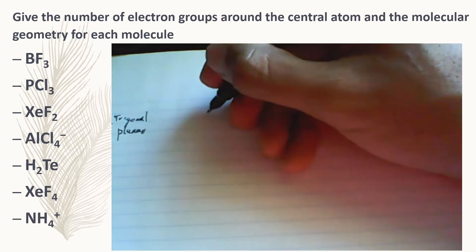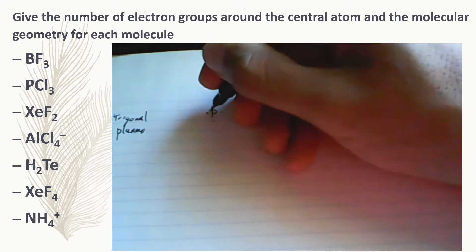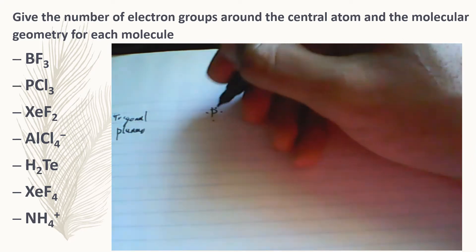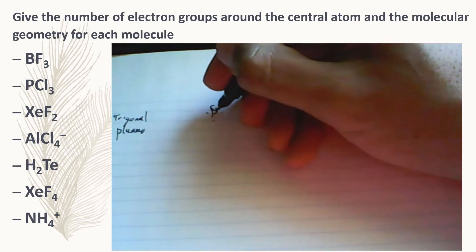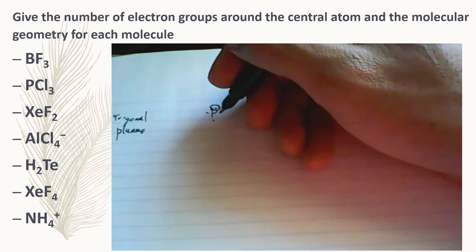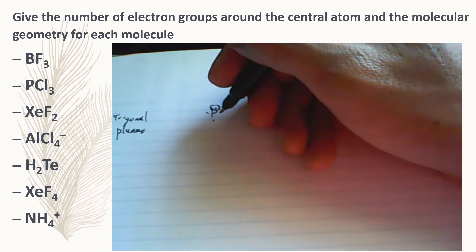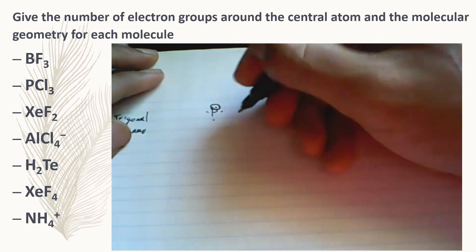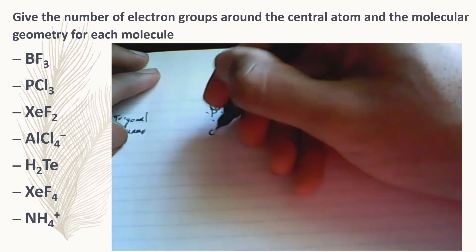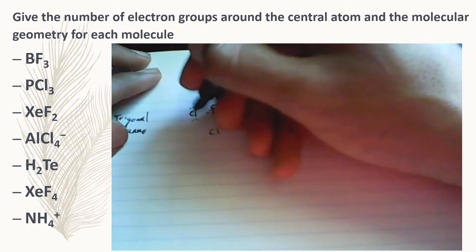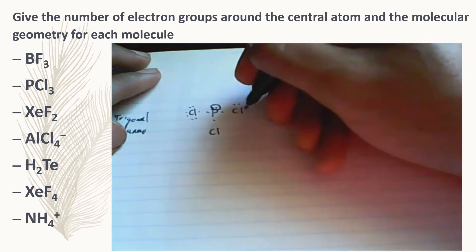The next one is phosphorus trichloride. Phosphorus is in group 5A, which means you have five valence electrons. When you fill in the four main electrons, you're going to start pairing electrons, so phosphorus is going to have one lone pair. Then you're going to have three chlorines around the phosphorus. Chlorine has seven valence electrons.